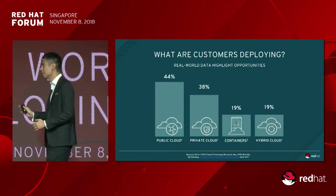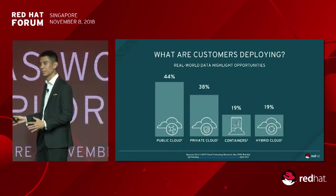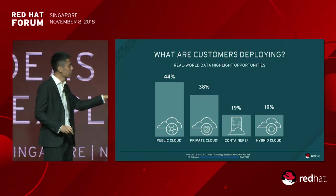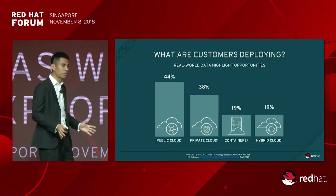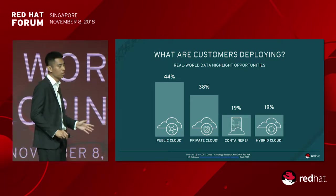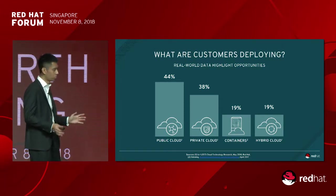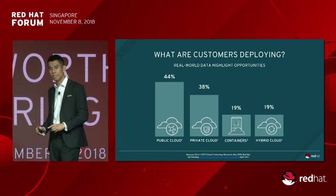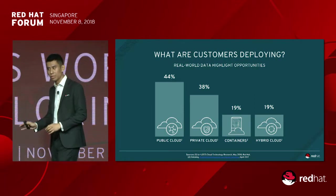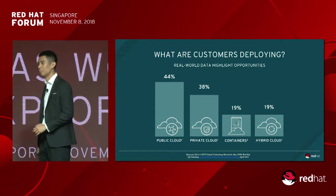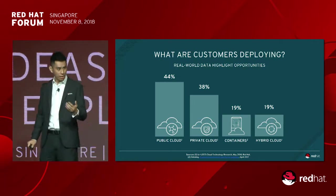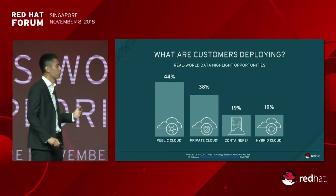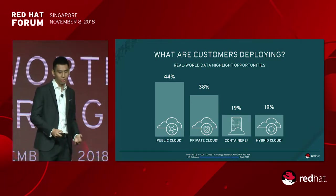Looking at a survey Red Hat has done globally, 40% of customers are running some form of cloud — whether public cloud on AWS, Azure, or GCP, or private cloud. Interestingly, about 20% are on containers and 20% on hybrid cloud. Year over year, you're seeing an increasing trend in the number of users running containers.